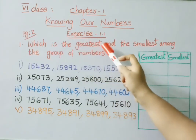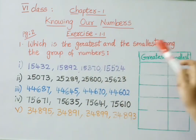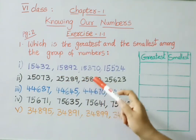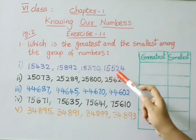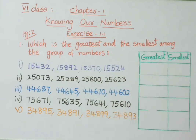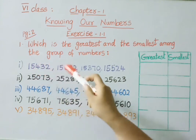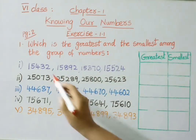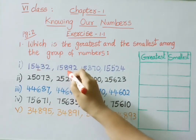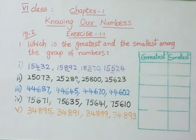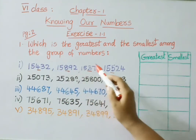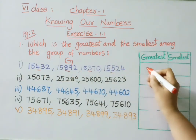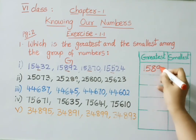See now page number 2, Exercise 1.1, first sum: which is the greatest and the smallest among the group of numbers. The first group is 15,432, 15,892, 15,370, and 15,524. All four numbers start with 15,000, so let us see the hundreds place value. The hundreds digits are 400, 800, 300, and 500. The greatest is 800, so 15,892 is the greatest number.